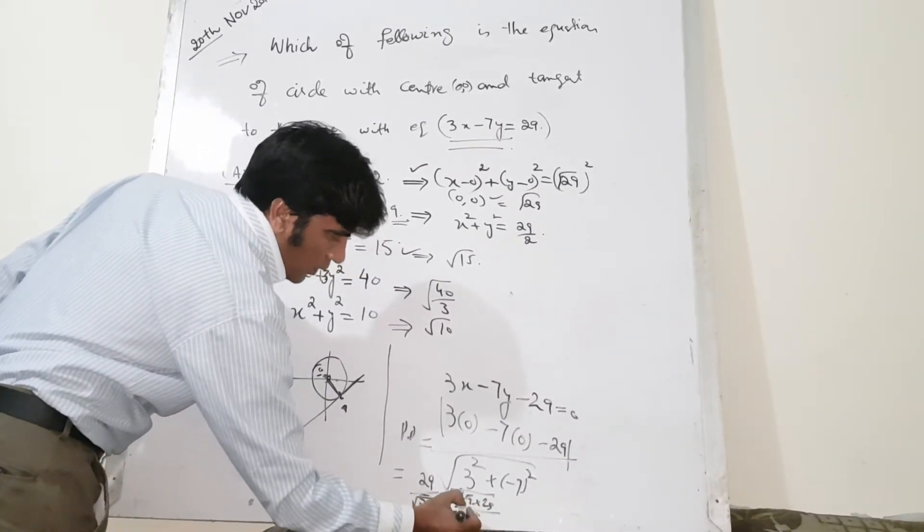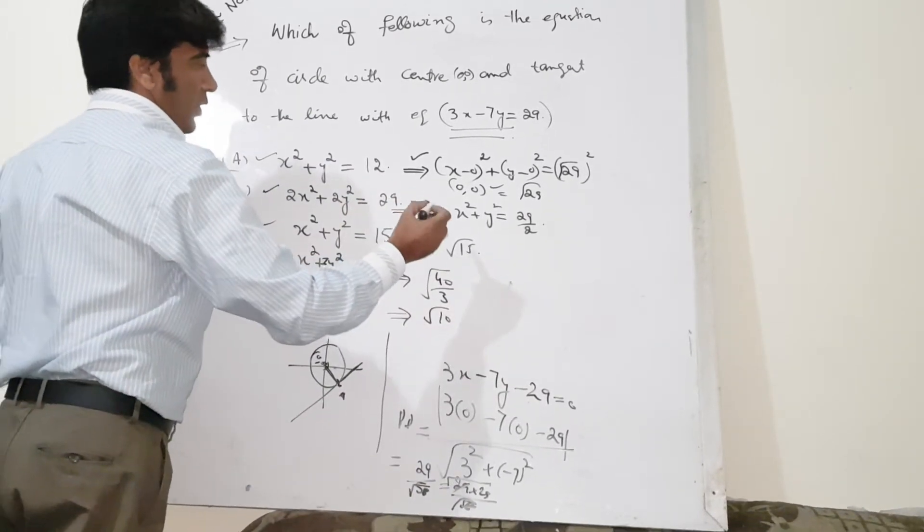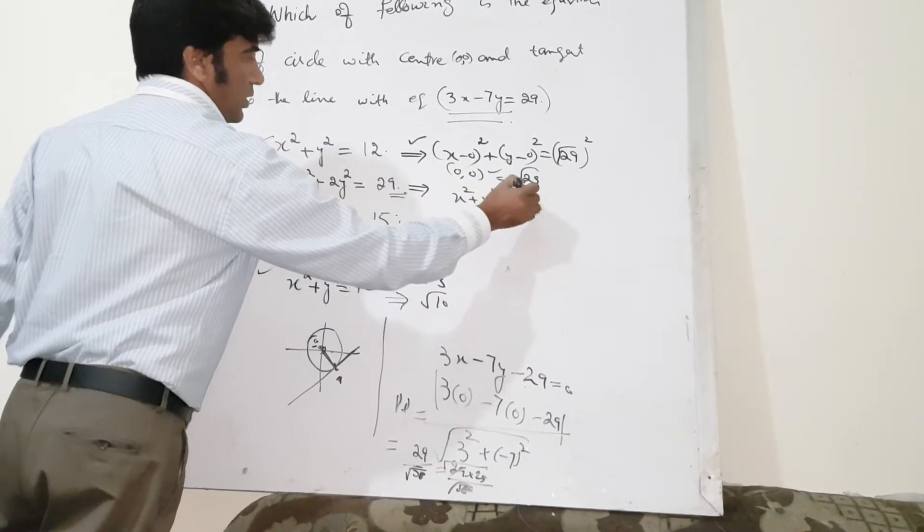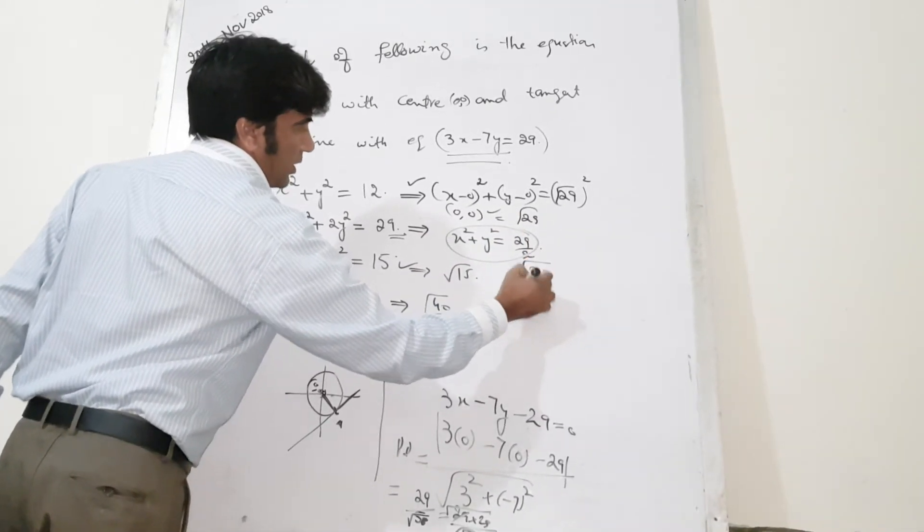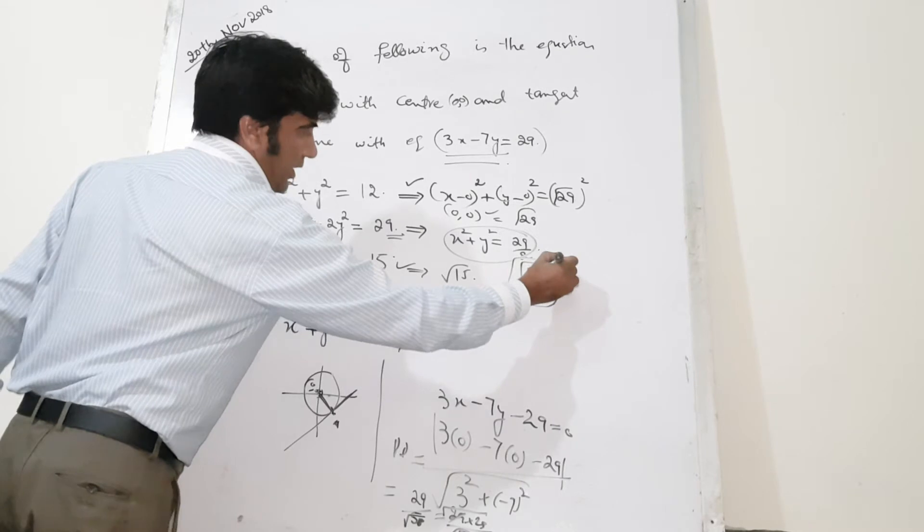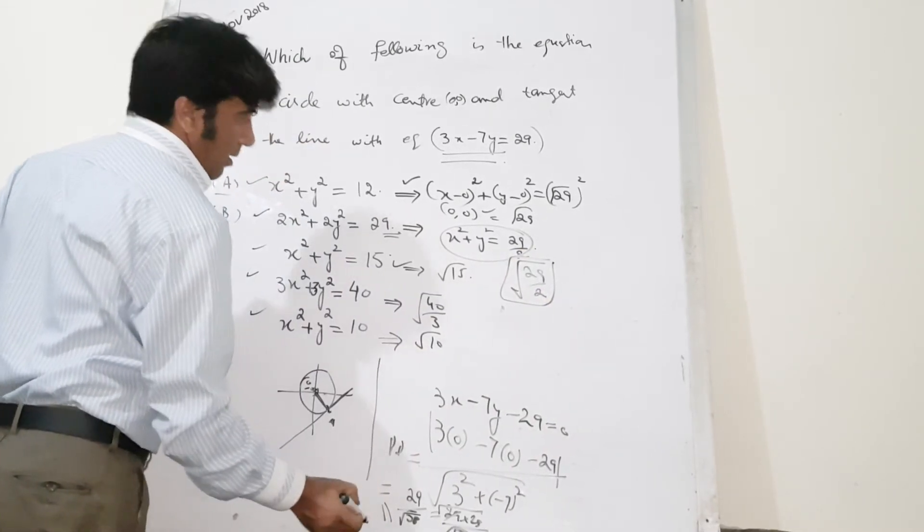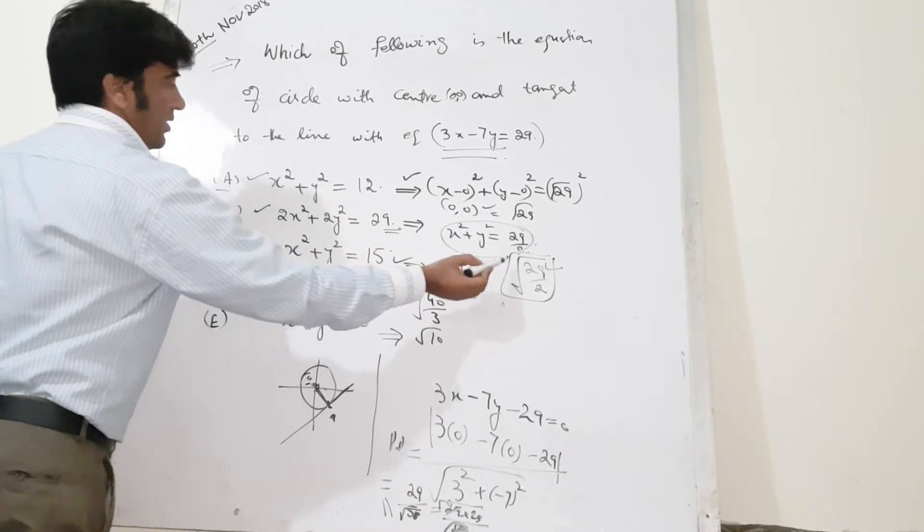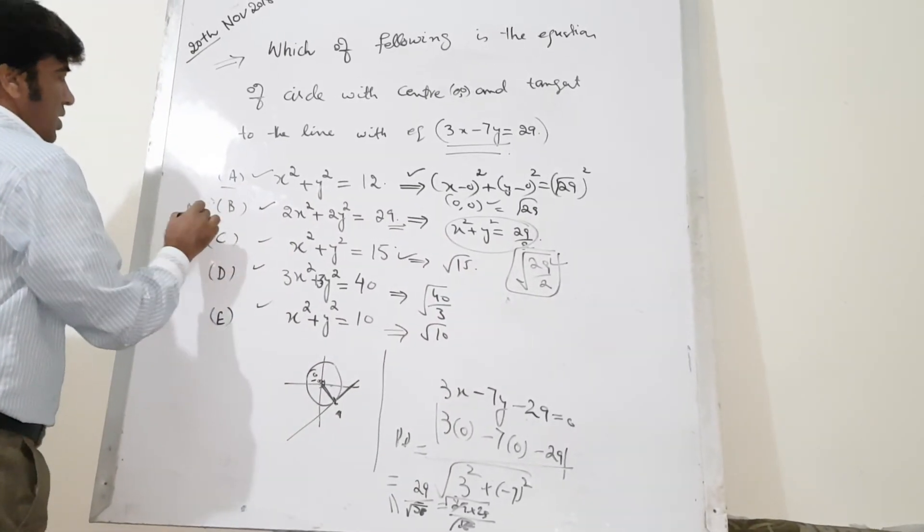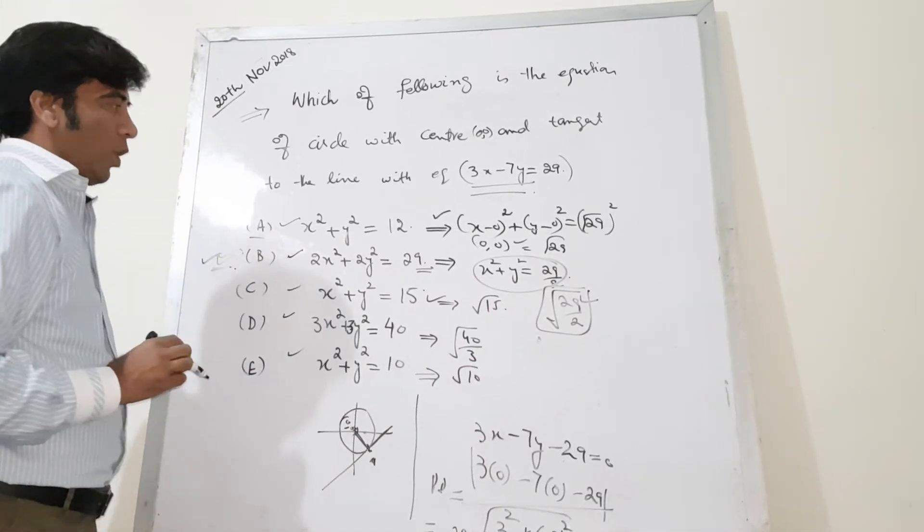So 29 over square root of 58. Because in this case, 29 over 2 can be written like this which is equal to the radius. So this answer matches exactly with this answer and this answer belongs to option B. So B is the correct option.